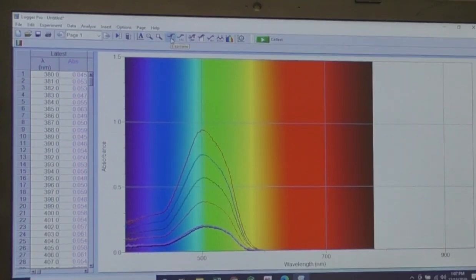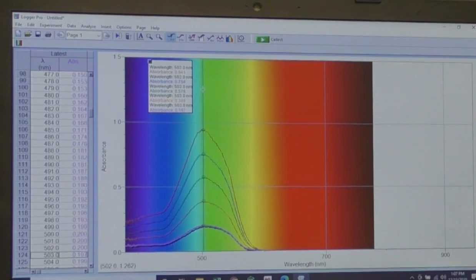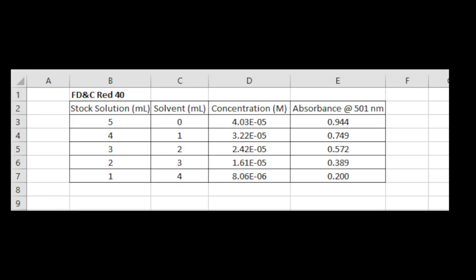Once you have absorbance readings for all your solutions, click the Examine icon and move the line to the point of maximum absorbance or lambda max. You will be able to see the absorbance values for all the solutions. Transfer these values into your Excel table.